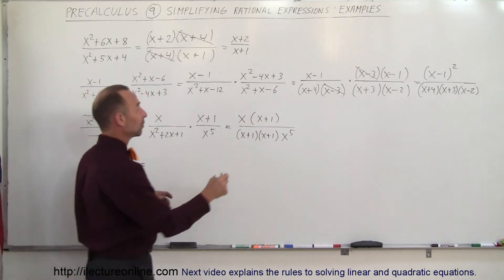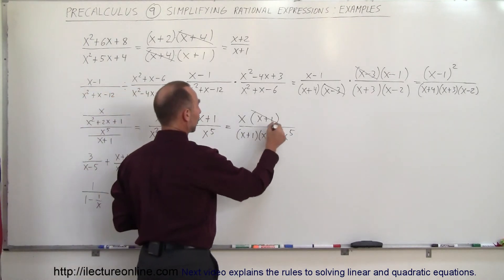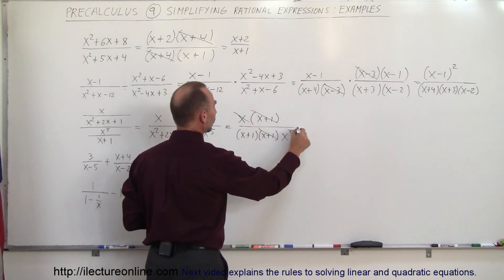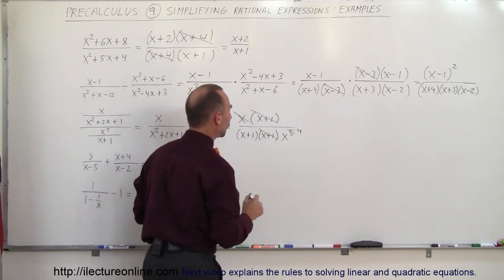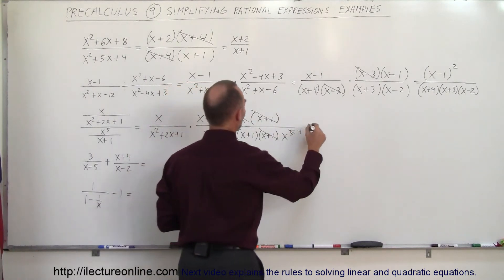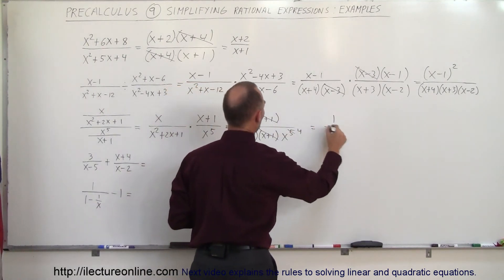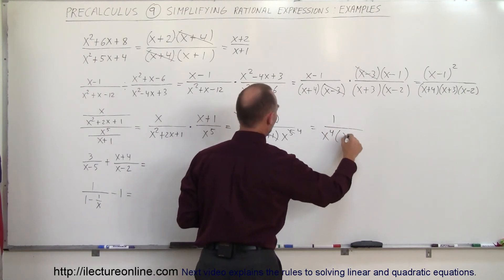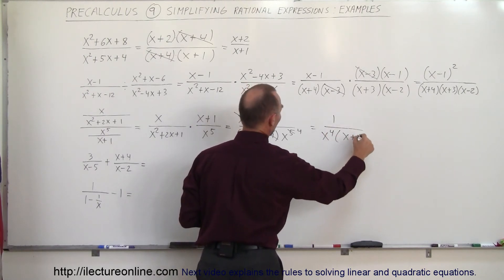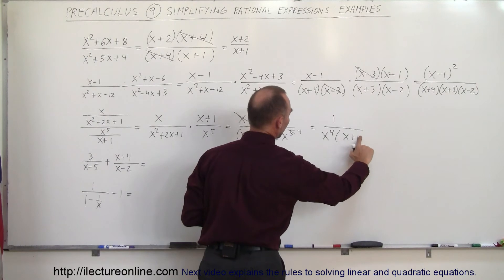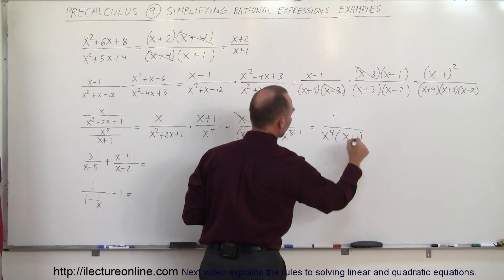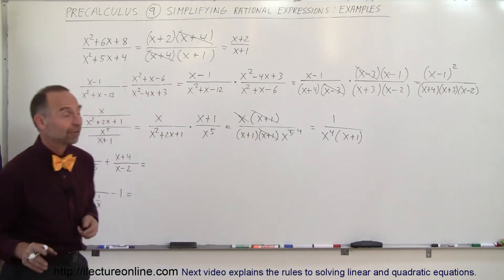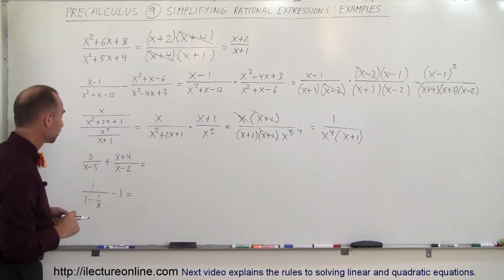Now I can simplify. I have an x plus 1 that cancels, and this x can cancel out one of those x's in x to the fifth — that becomes x to the fourth. So this becomes 1 over x to the fourth times x plus 1. That would be the simplified form of that example.